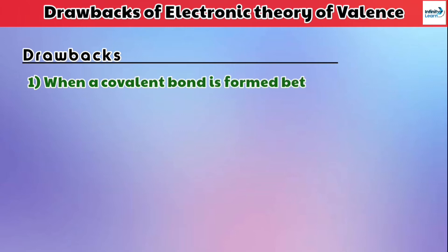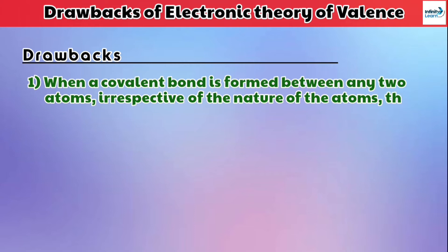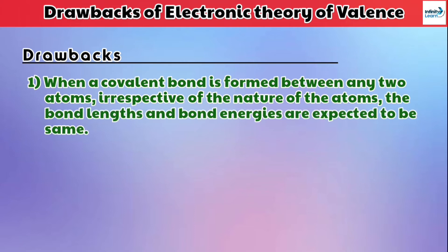Now let's move to the next topic, which is drawbacks of electronic theory of valence. The first drawback is: when covalent bonds form between any two atoms irrespective of the nature of the atom, the bond length and bond energies are expected to be same.